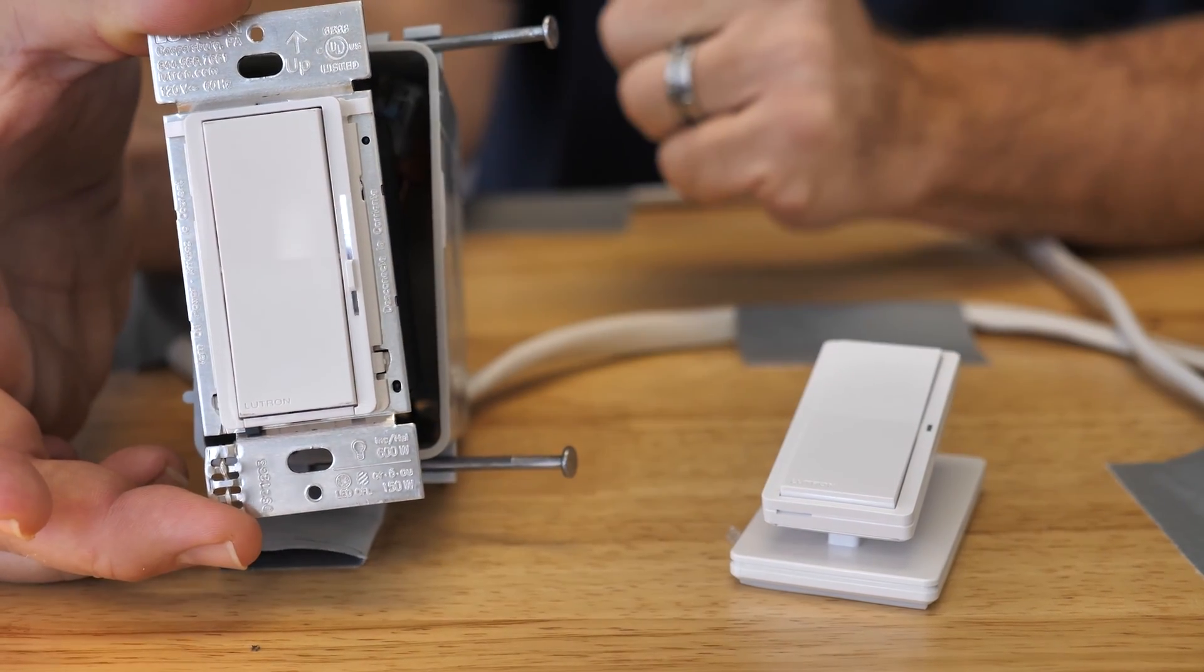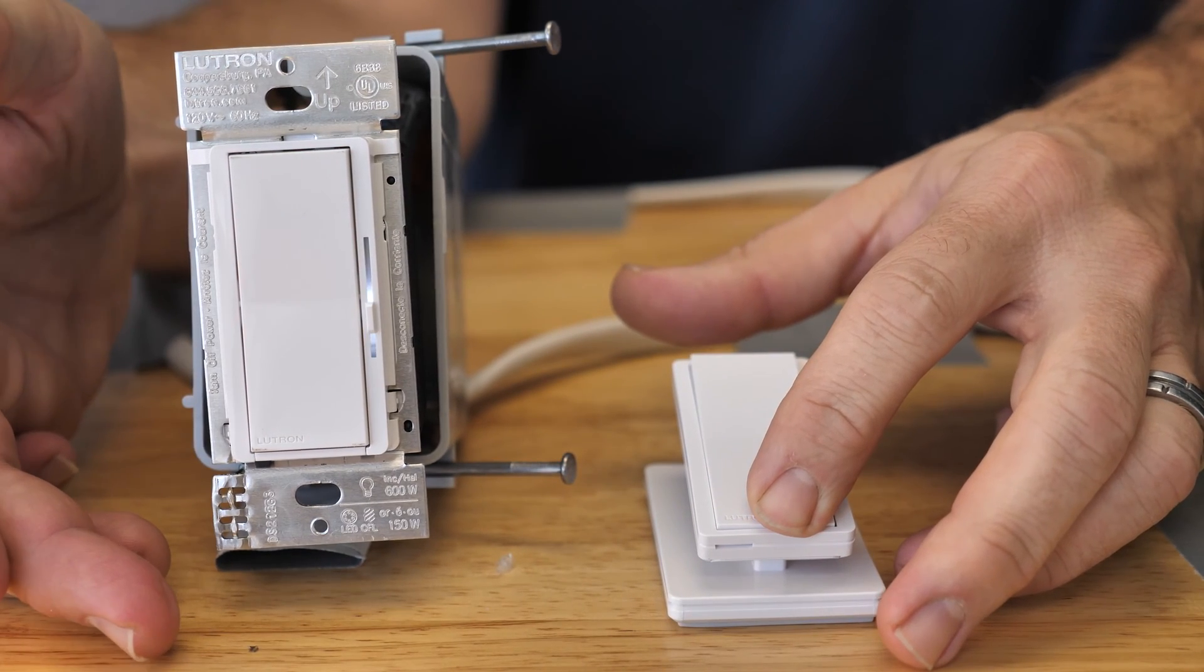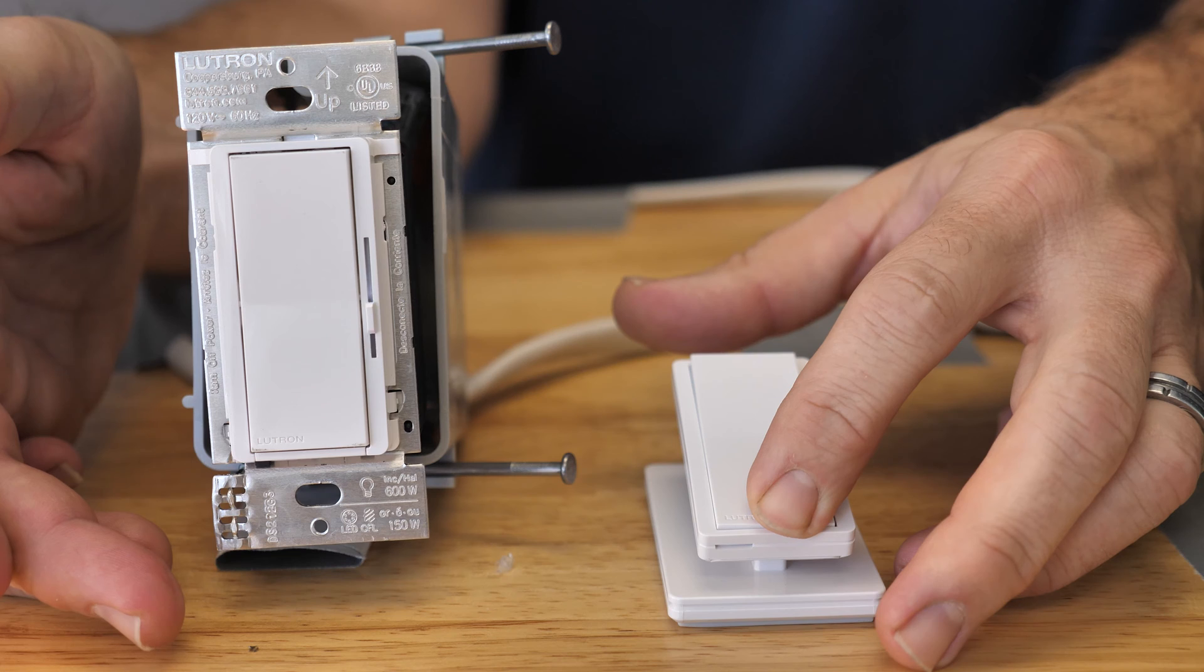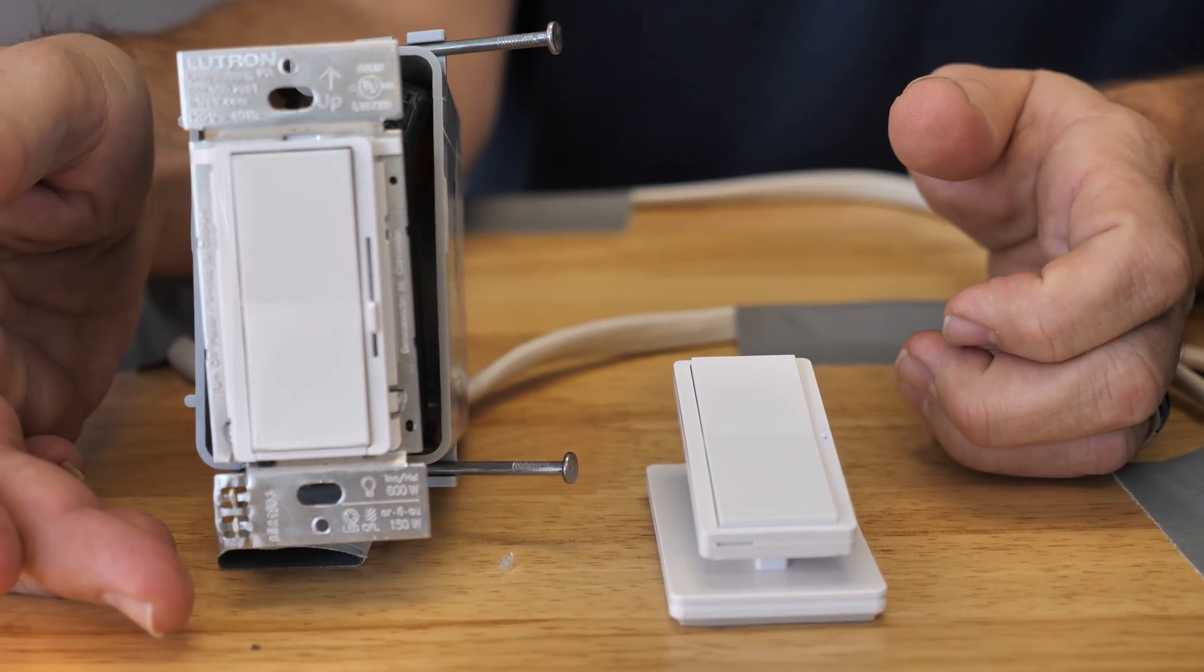You'll notice that the light has now come on. We're going to hold our paddle now in the off position for seven seconds. Once they're paired, you're going to see the light flash. There we go.